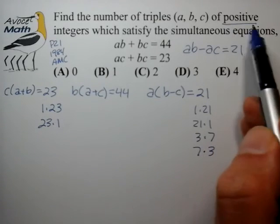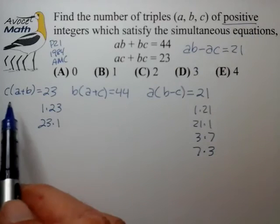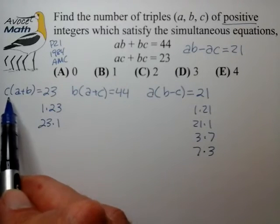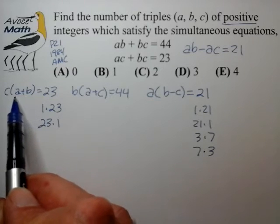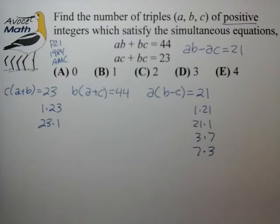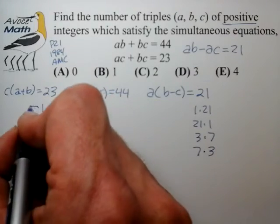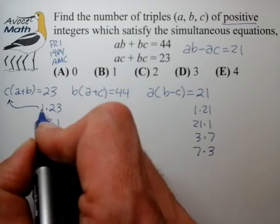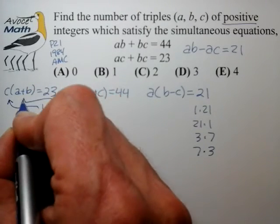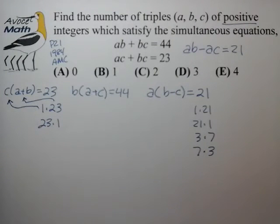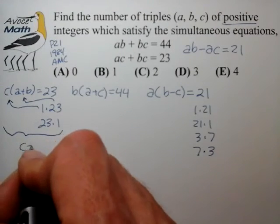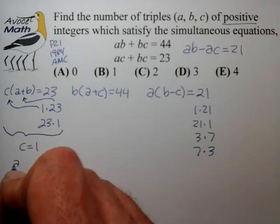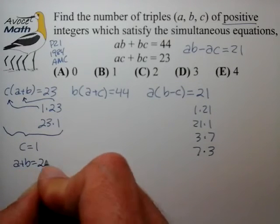This is where the positive integer constraint comes in really handy, because not only is a plus b positive, but because a and b individually are positive, we know that a plus b has to be 2 or larger. And so from that we see that the only possible assignment is for c to take on the value of 1 and a plus b to take on the value of 23.